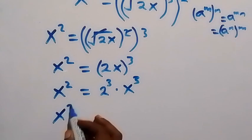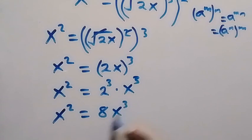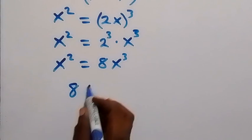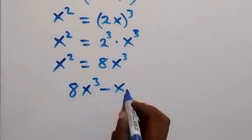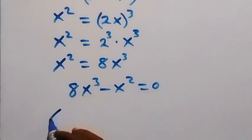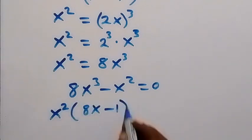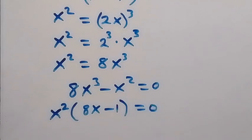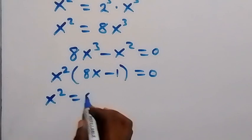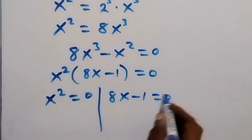So x squared equals 8x cubed. Taking x squared to the other side, we form the equation 8x cubed minus x squared equals 0. Factoring out x squared as the common factor gives us x squared times (8x minus 1) equals 0.